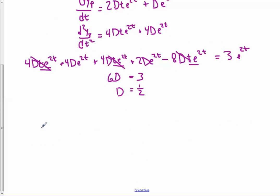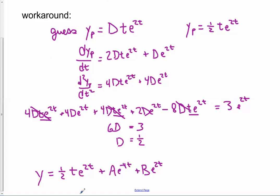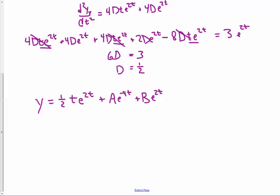So our particular solution is 1 half t e to the 2t. And if we put everything together, we take that one, and we add our homogeneous that we figured out previously, and there it is. And that's how we do it.